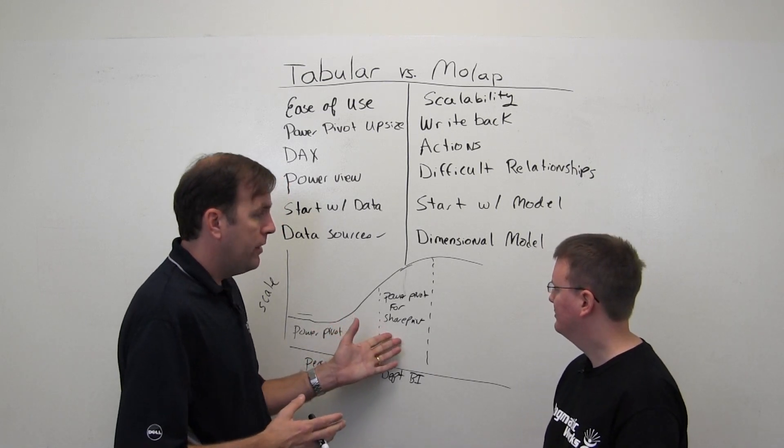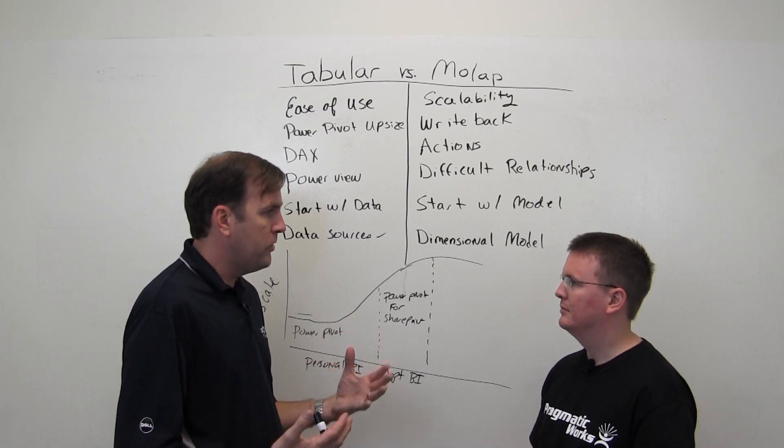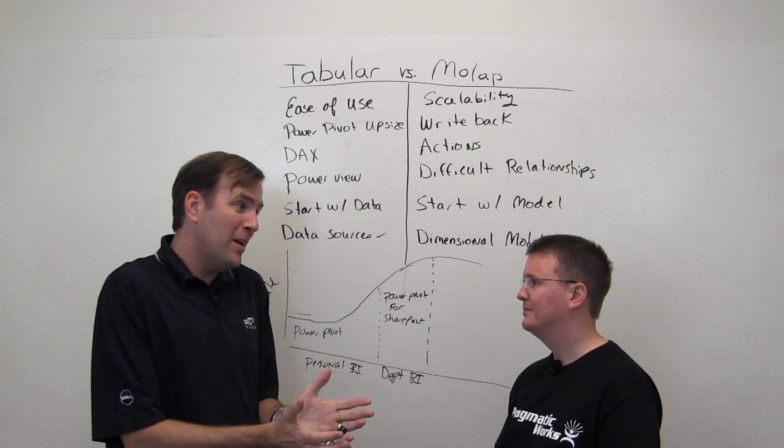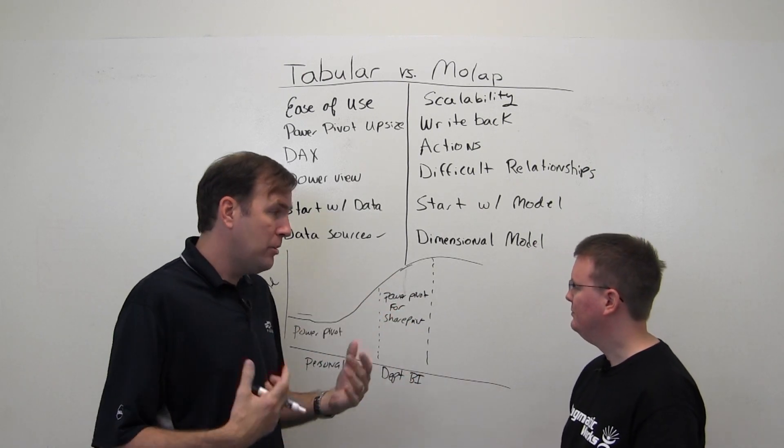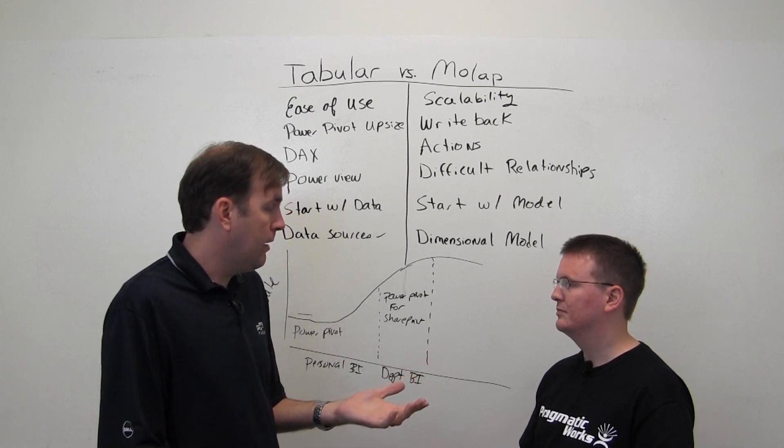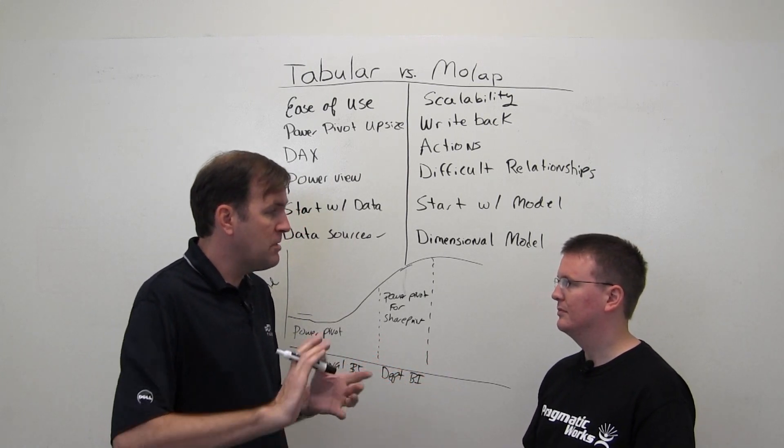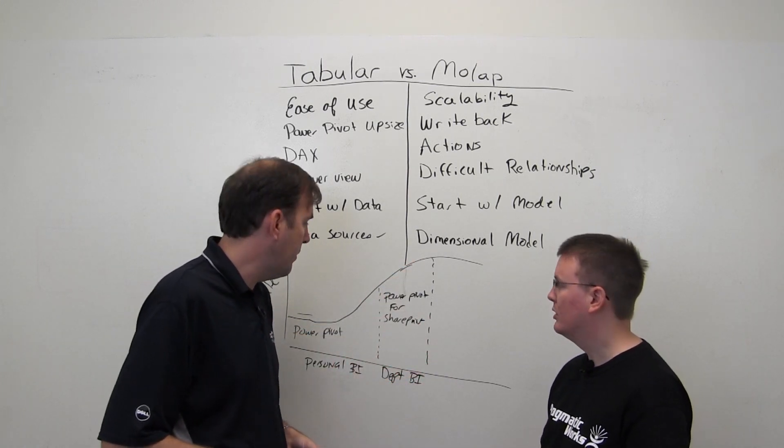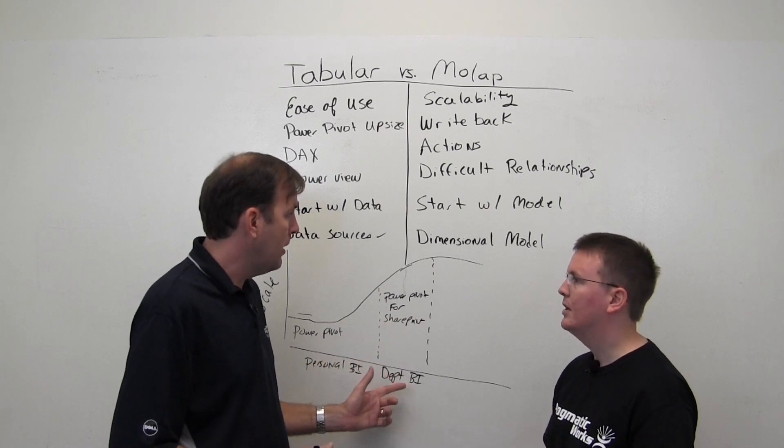And it actually leverages analysis services as a back-end to do those data refreshes and scale out the resources it needs. And again, the nice thing about this is you don't have 80 users emailing this 100 meg spreadsheet around. Even though it hyper-compresses in PowerPivot, if you have a 100 megabyte data warehouse behind the scenes, it's still going to be a 10 meg spreadsheet. So this is more for the department now at this point.